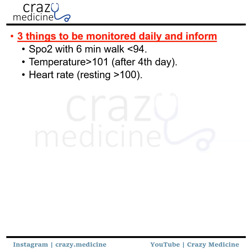Then, things to be monitored daily and reported. The most important is SPO2 monitoring before and after a 6-minute walk test — if it is falling below 94, they have to consult the doctor or nearest hospital. Then temperature monitoring: temperature more than 101 degrees after the 4th day of symptom onset is a dangerous sign. Then resting heart rate of more than 100 is also a dangerous sign — resting heart rate means checking during the afebrile phase.